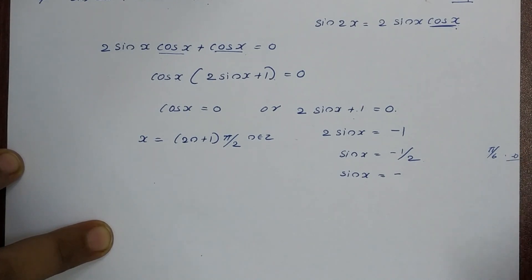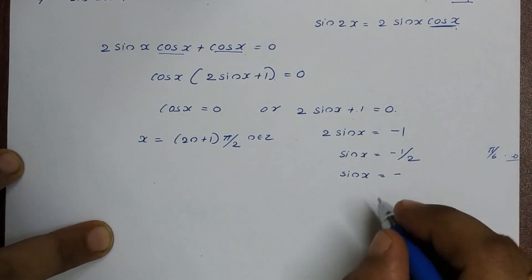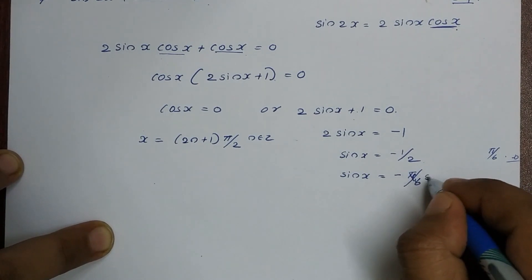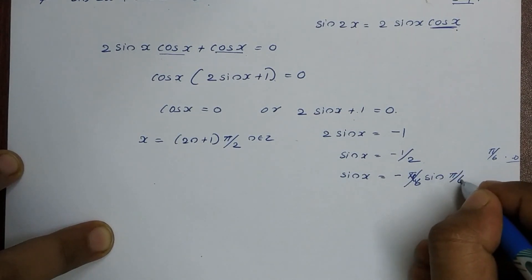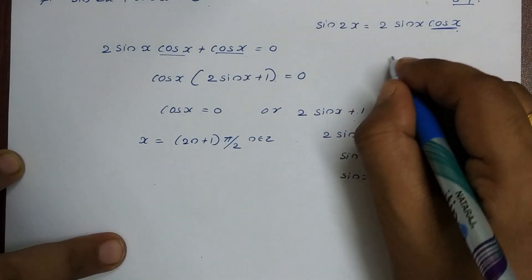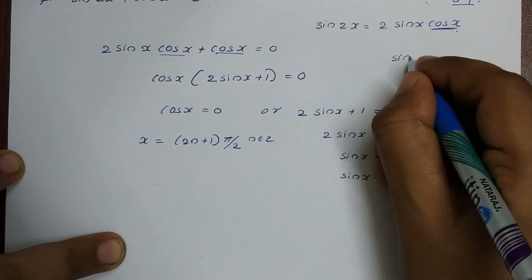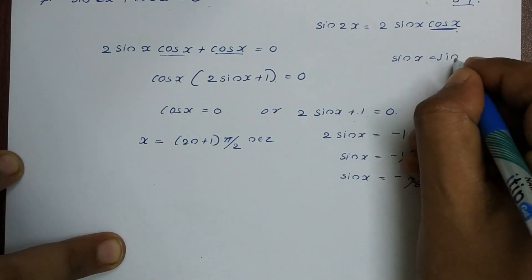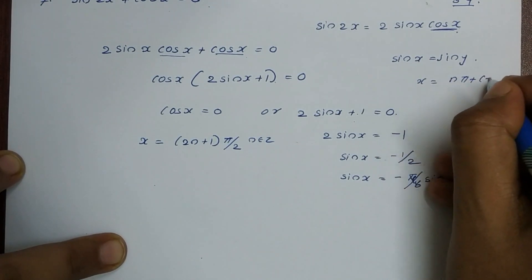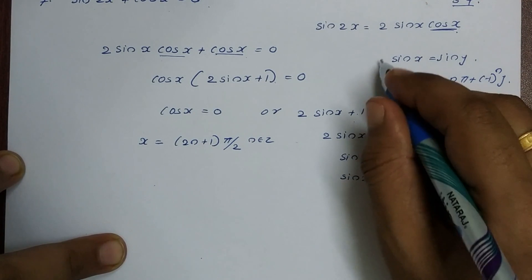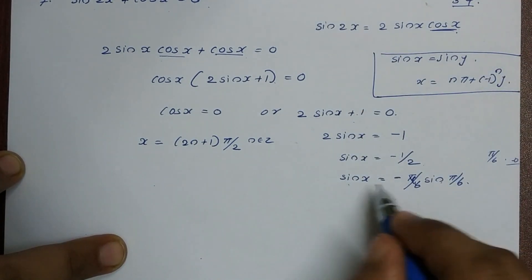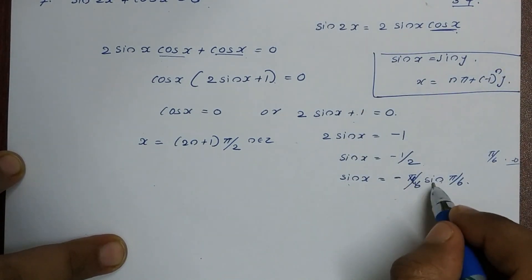The reference angle is 30 degrees, that is π/6, since sin(π/6) equals 1/2. Since the value is negative, we use the general formula: sinx equals siny gives x equals nπ plus or minus (−1)^n times y.